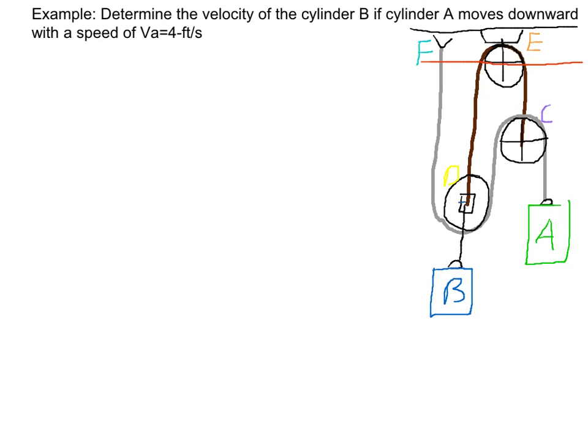Then we have to dimension everything. The key to dimensioning everything is to find all the moving parts. This pulley that B is connected to will move, this pulley C will move, and A will move. So those are our moving parts. We have S of B, S of C, and S of A.